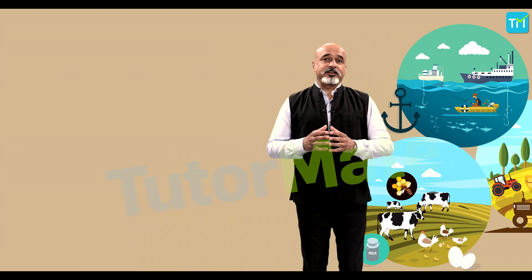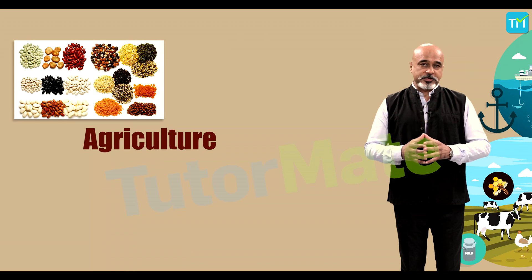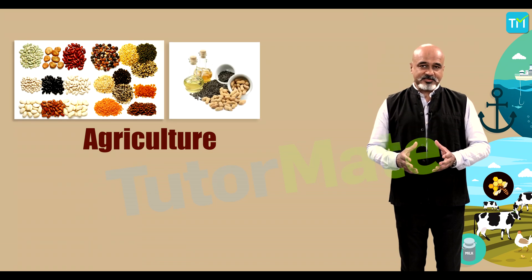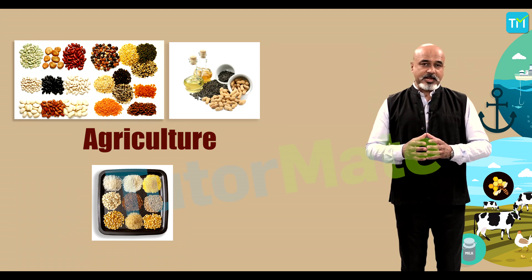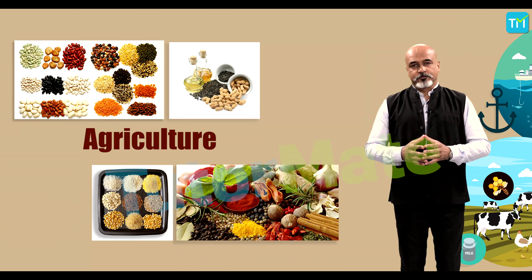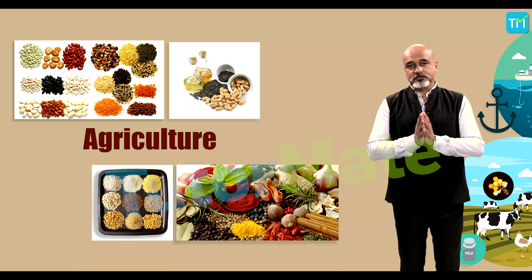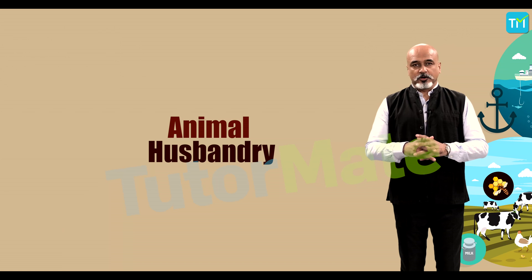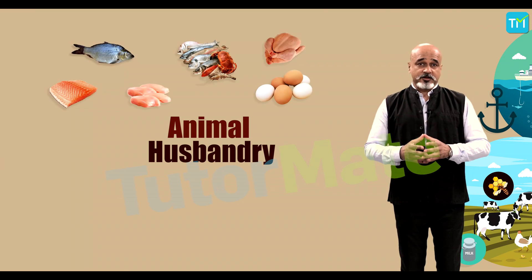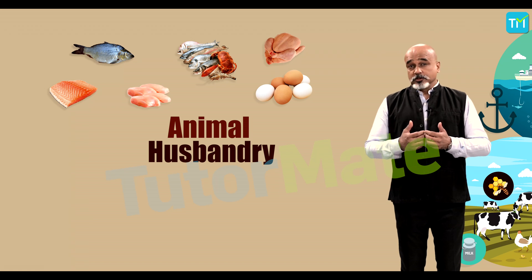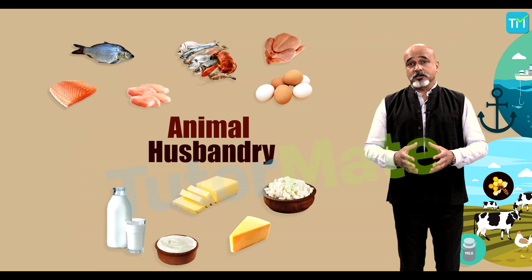Both plants and animals are major sources of food for us, scientifically called agriculture and animal husbandry. From agriculture: beans provide proteins, oil seeds provide fats, cereals provide carbohydrates, and pulses, vegetables, spices, and fruits provide vitamins and minerals.